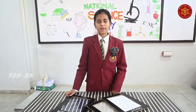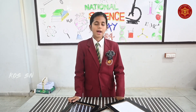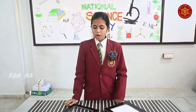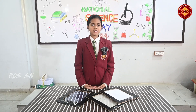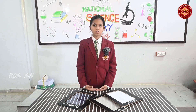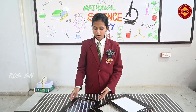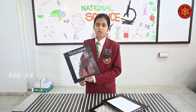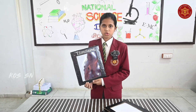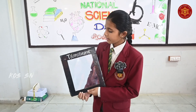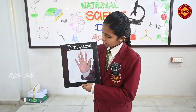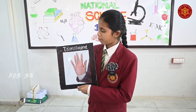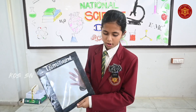Good afternoon everyone. Myself Roma, and I am studying in fifth standard. Today I am going to explain about transparent, translucent, and opaque objects. A transparent object is one that allows light to pass through it. You are able to see my hand, so it is an example of a transparent object.